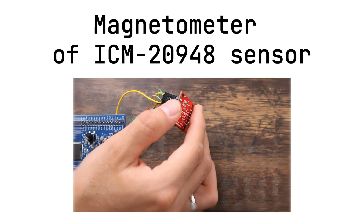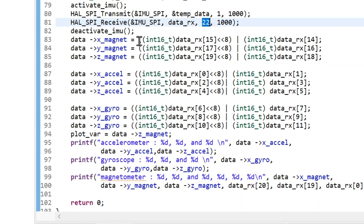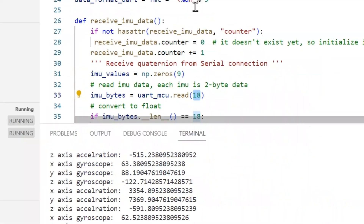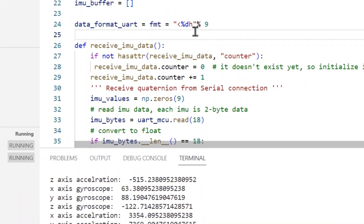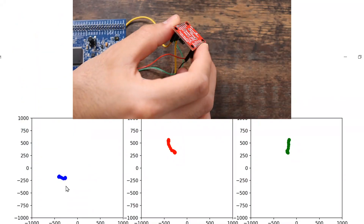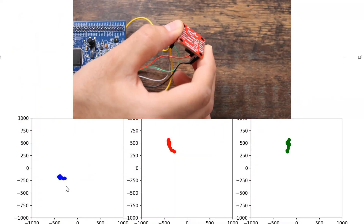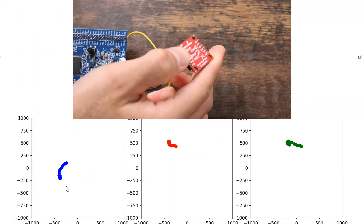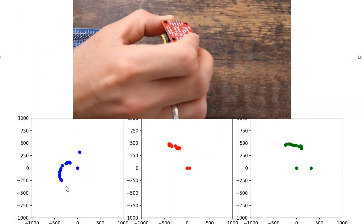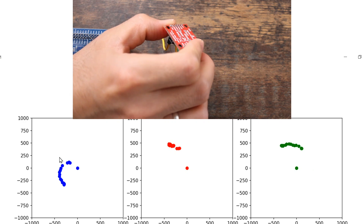Hello, we will read the magnetometer of the IMU sensor and visualize data using a Python script. As a result, you can easily work with IMU sensors to estimate an object's orientation.